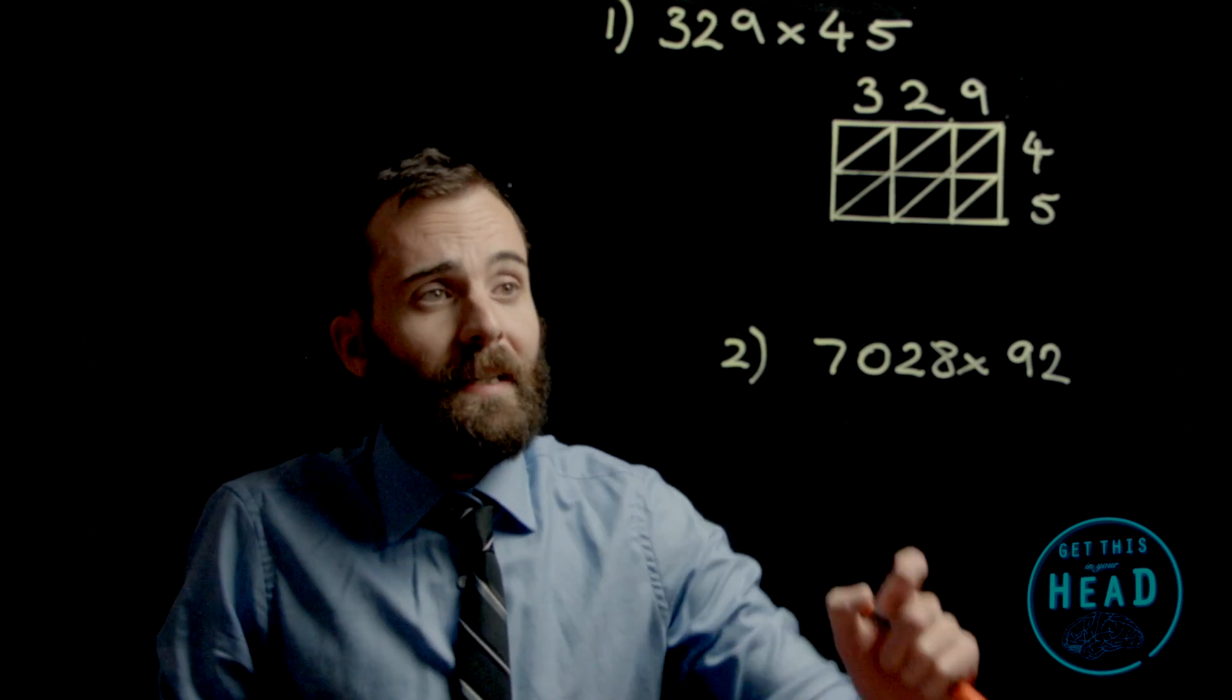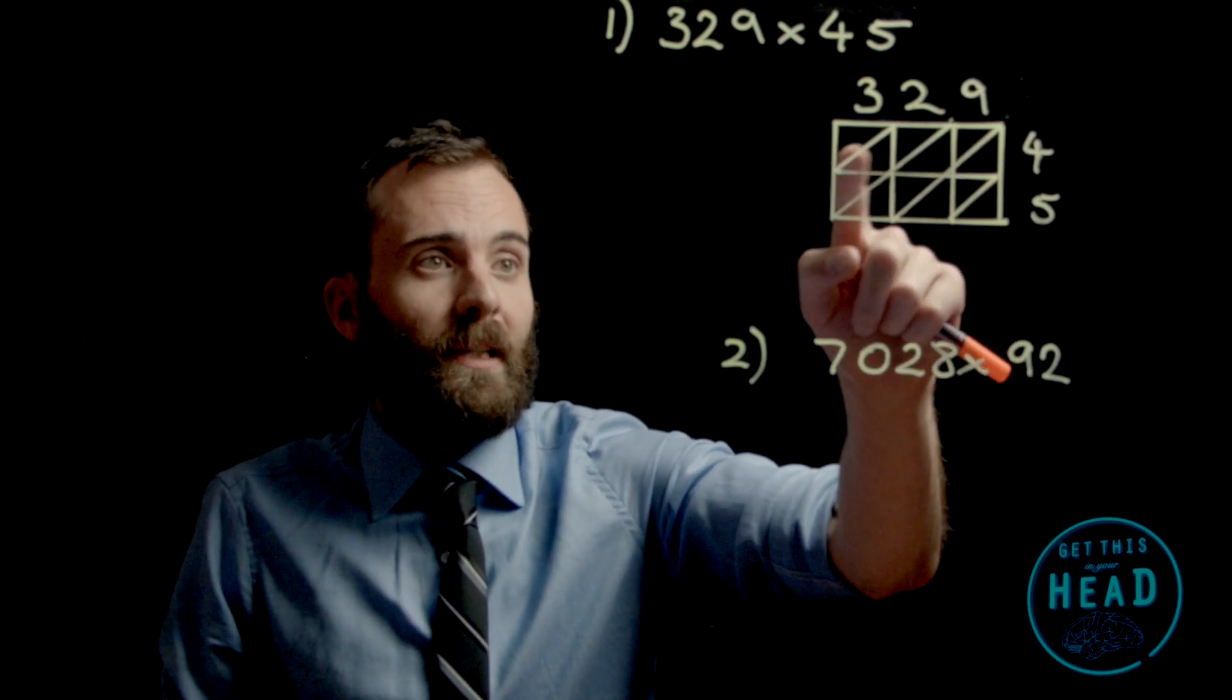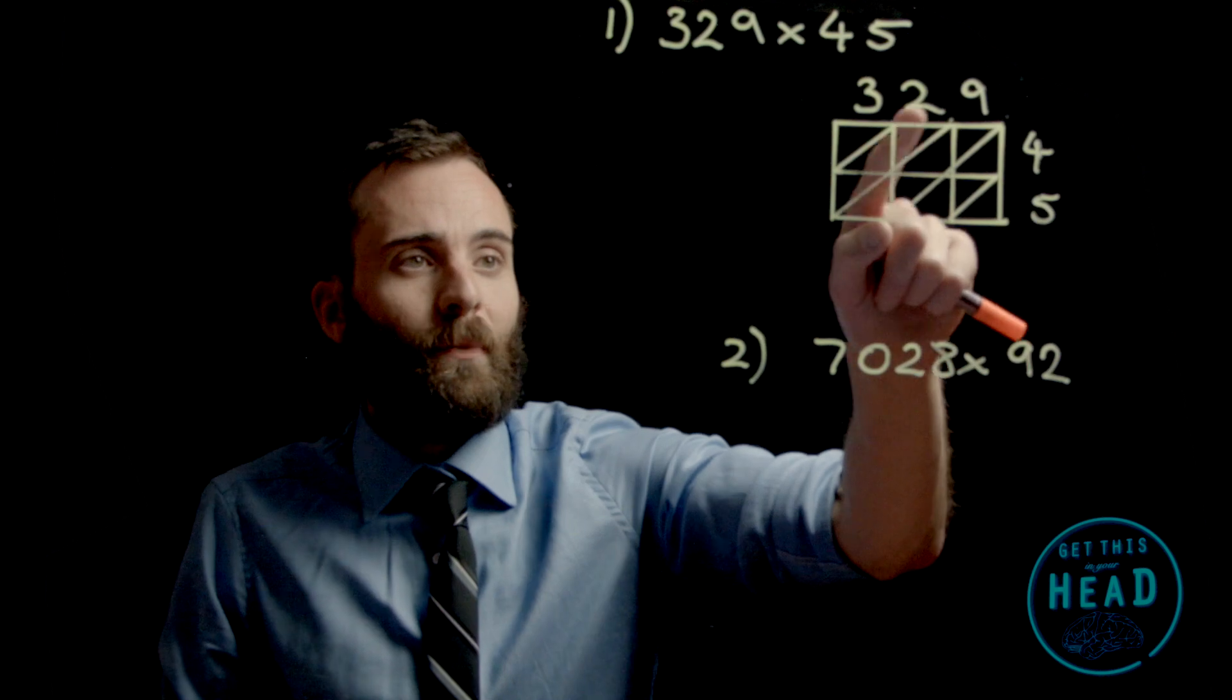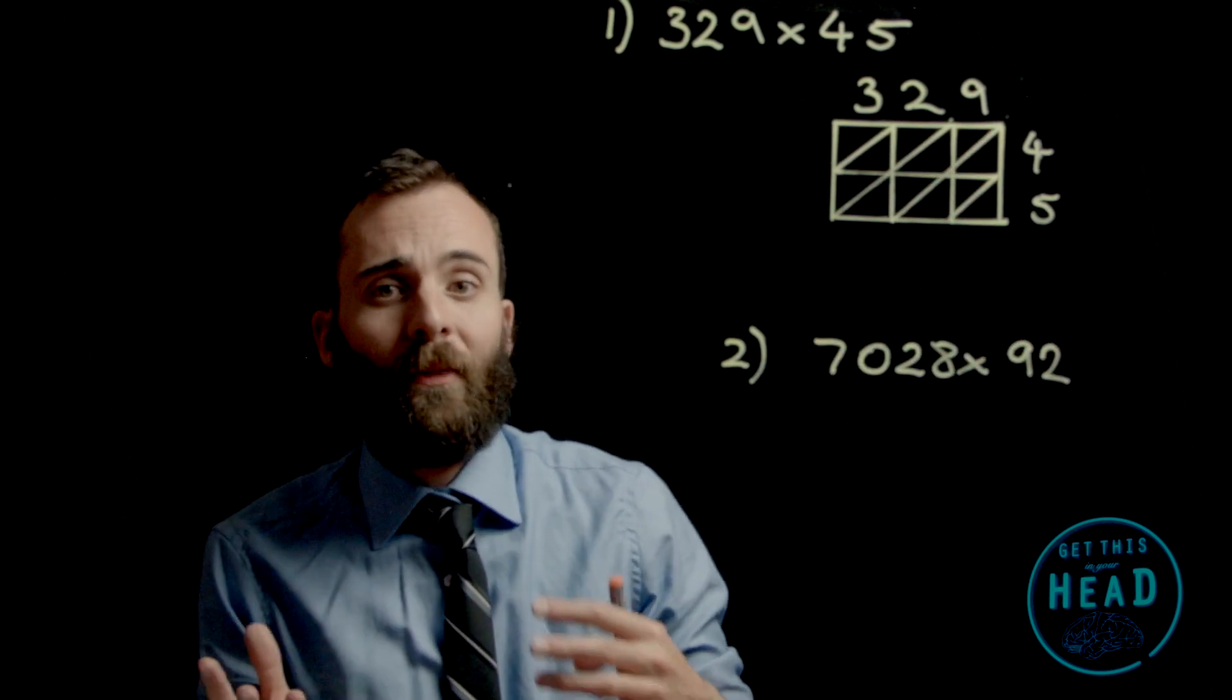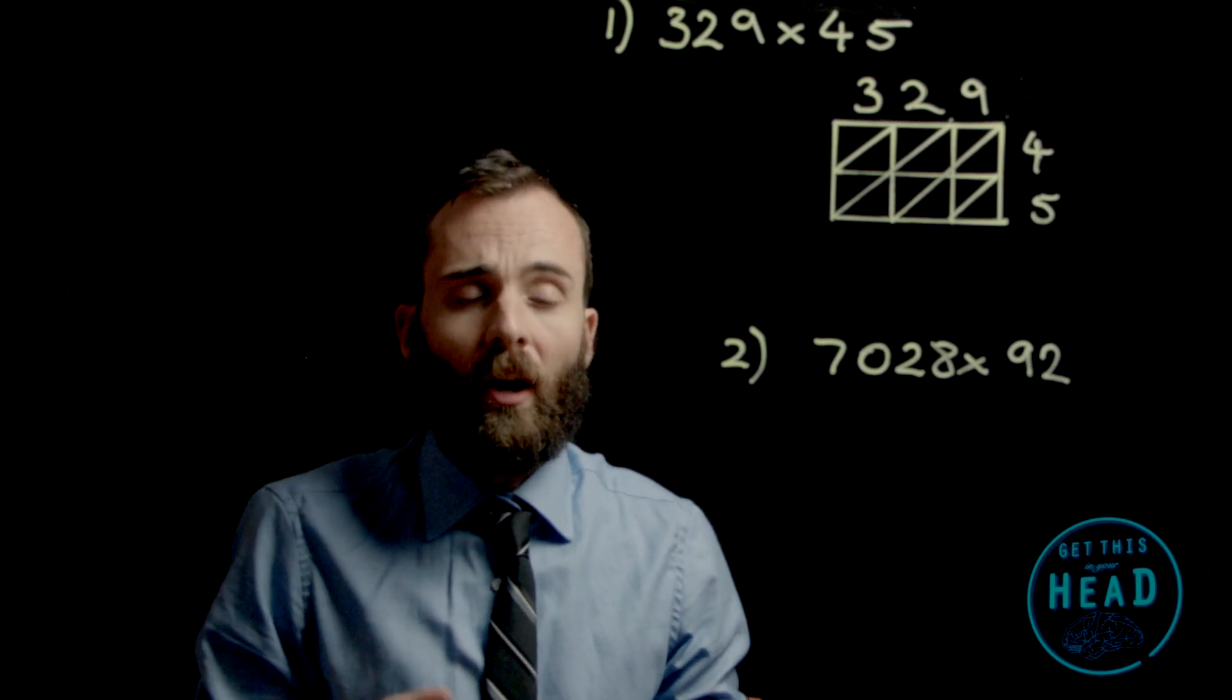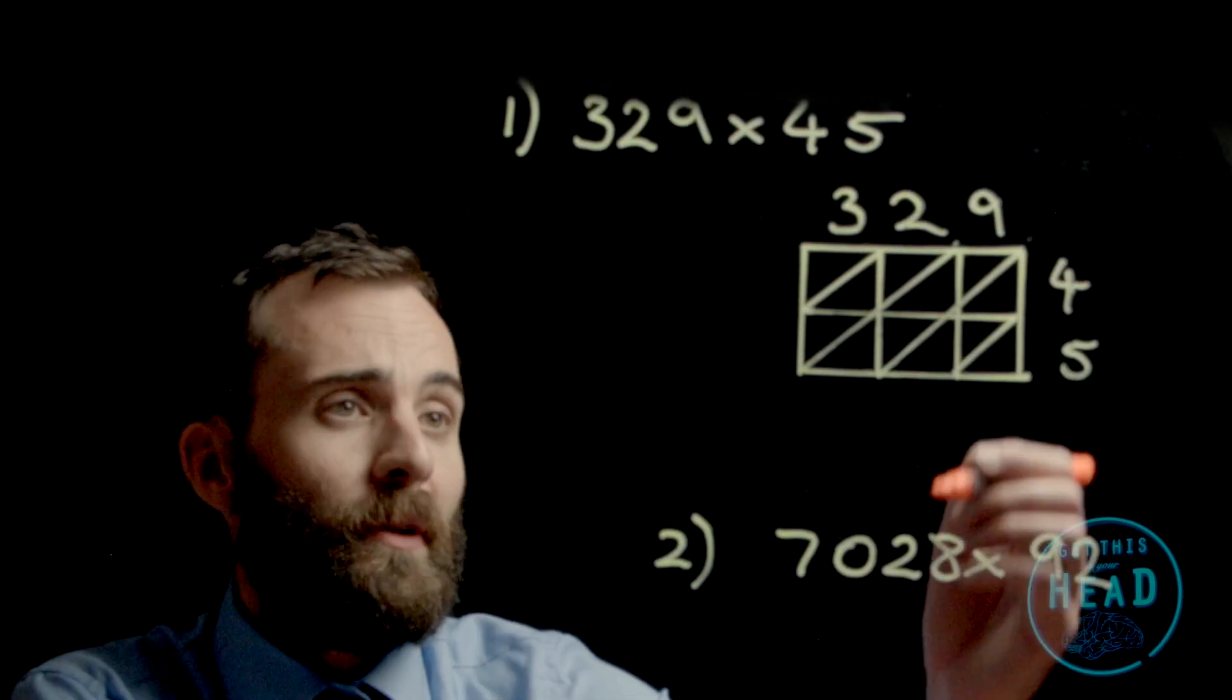The difference you'll notice is that going through the boxes—1, 2, 3, 4, 5, 6 boxes—we have a diagonal line cutting through each of them. This separates the tens and the units in each of our answers. The first thing we do is fill in the grid.